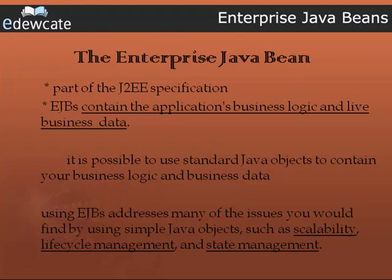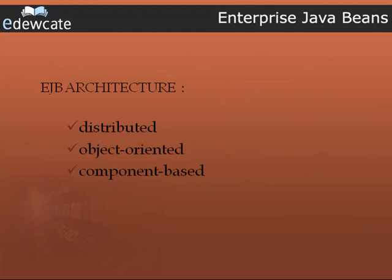EJBs provide a distributed, object-oriented, component-based architecture. We said it is distributed because you communicate across remotely connected JVMs. We said it is object-oriented because it's all about dealing with more than primitives — we deal with real-time objects. We said it is component-based because it's a plug-in and plug-out concept. If you have written an employee bean and need a department bean, just pick it up from somewhere and plug it into your application.